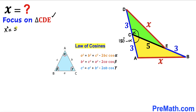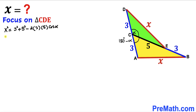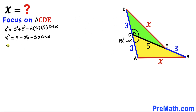Applying the law of cosines to triangle CDE: x² = 3² + 5² − 2·3·5·cos(alpha). Simplifying: x² = 9 + 25 − 30·cos(alpha), which gives us x² = 34 − 30·cos(alpha). I'm going to label this as equation number 1.